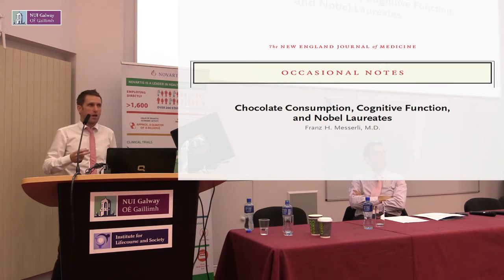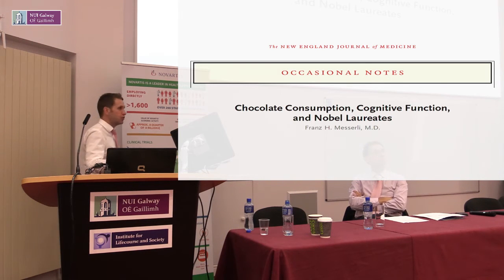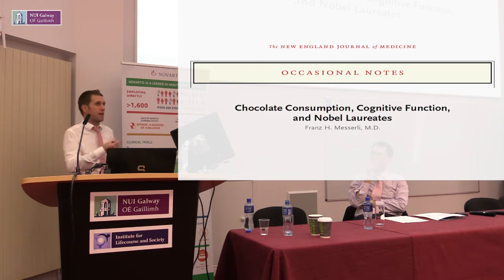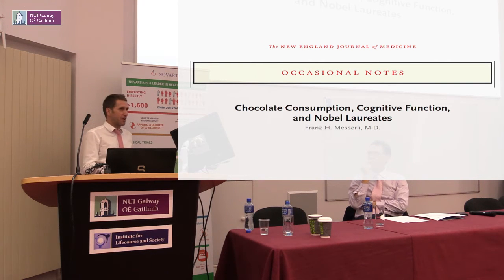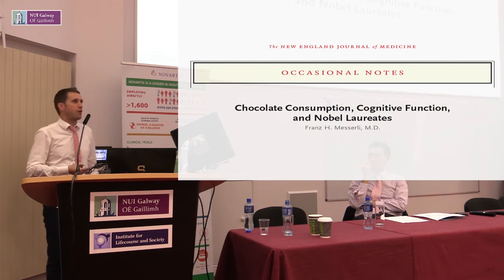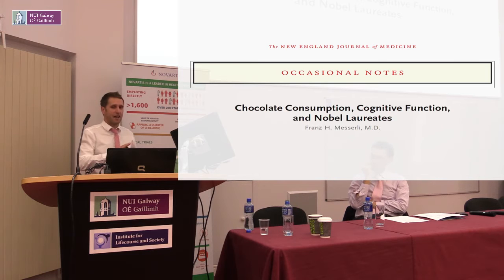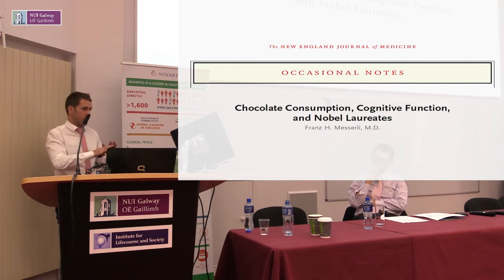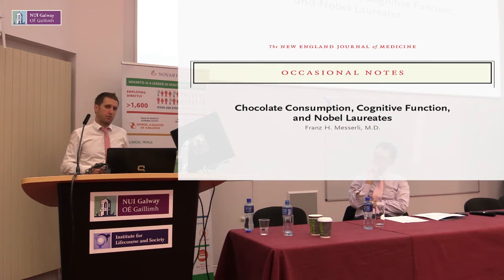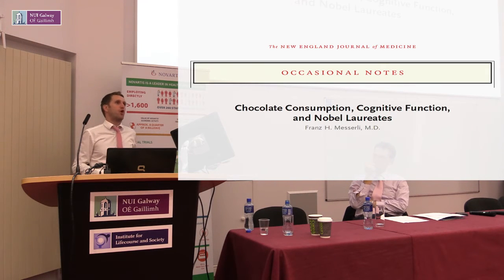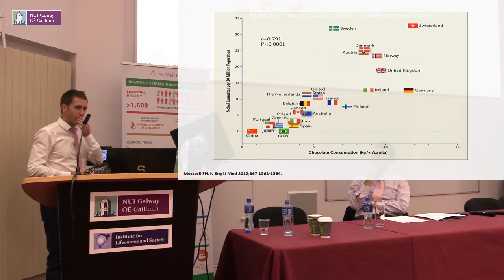His testable hypothesis was that countries which consume more dietary flavonoids through chocolate might have higher levels of cognitive function than countries consuming less. Since he didn't have appropriate data on cognitive function at country level, he used a proxy measure — the number of Nobel laureates per head of population. He then produced a striking graphic showing chocolate consumption in kilograms per year per capita on the x-axis and Nobel laureates per 10 million population on the y-axis, with little flags for each country.